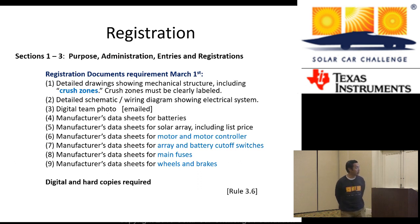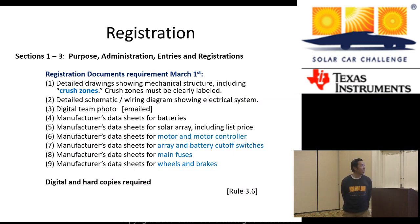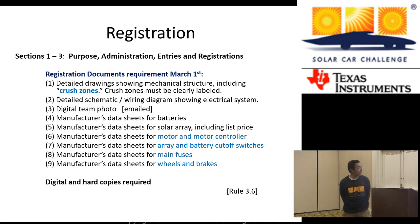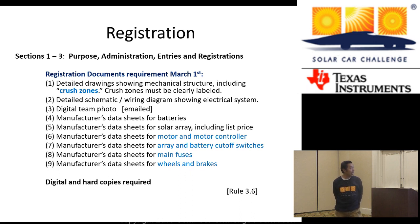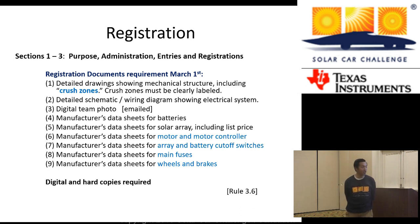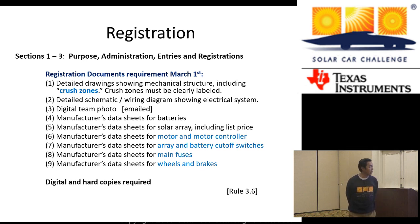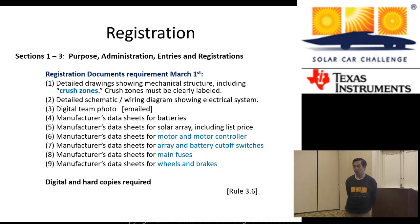As part of registration, including the registration document on the forms page, we need certain other information: your mechanical diagram with crush zones clearly labeled, your electrical diagram showing how your electrical system is wired together, a digital team photo that can be emailed, and manufacturer data sheets for all sorts of things so that we can check whether or not you comply with the regulations of your class. Digital and hard copies are required.